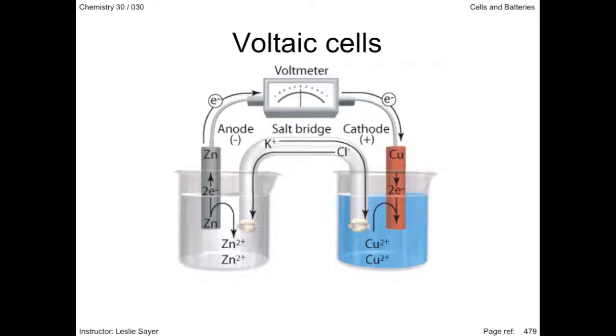There are a couple of new terms here. The electrode where oxidation occurs is called the anode. The electrode where reduction occurs is called the cathode. For experimental purposes, chemists find it useful to separate a voltaic cell into two half cells, the anode half cell and the cathode half cell.